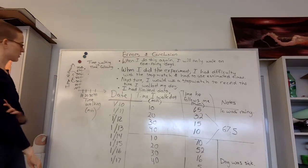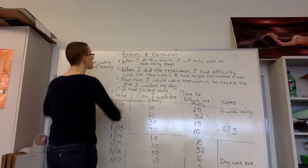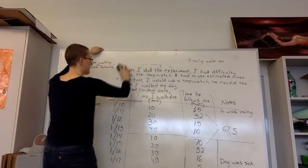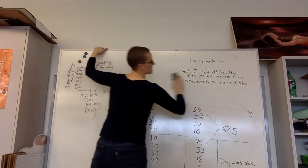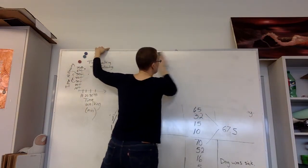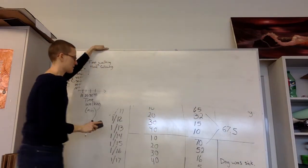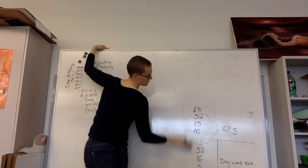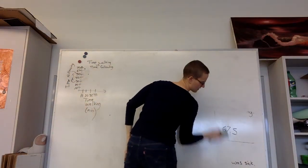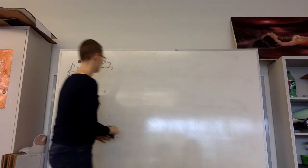So those are all things that could have caused error. There's certainly more and every experiment will have slightly different errors. So other things to think about are, are your measurements as accurate as they could be? Should you have done it longer? What changes would you make if you did it again? So those are things to be mindful of.